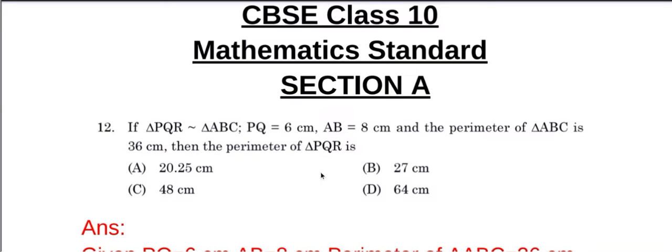Question number 12. If triangle PQR is similar to triangle ABC, PQ equal to 6 cm, AB equal to 8 cm and the perimeter of triangle ABC is 36 cm, then the perimeter of triangle PQR is.